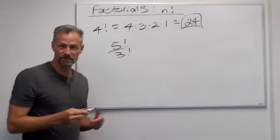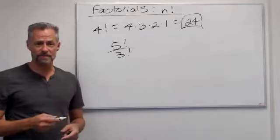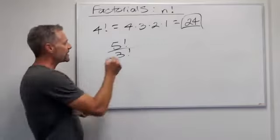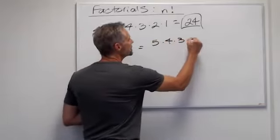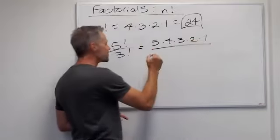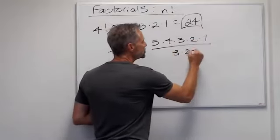5 factorial over 3 factorial. We're going to see this a lot when we're using this. Well, notice 5 factorial obviously means 5 times 4 times 3 times 2 times 1. And 3 factorial is 3 times 2 times 1.